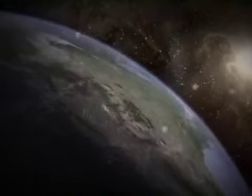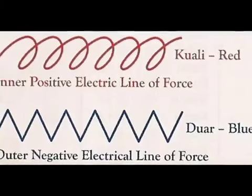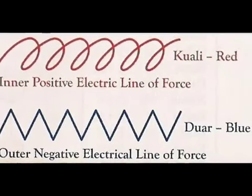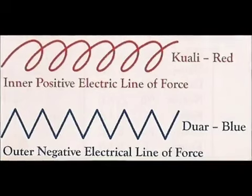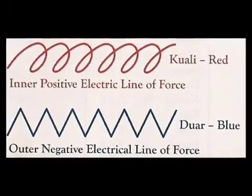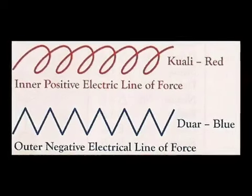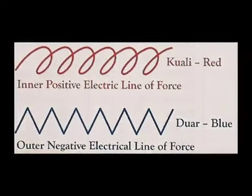The third dimensional body of temple contains the blue du'ar energetic line of force, outer negative. The fourth dimensional body of destiny contains the red kuali line of force, inner positive. These two forces are the root of the atomic galactic spin effect, as described in the Cosmic History Chronicles Volume 2.